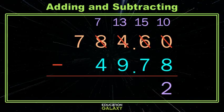10 minus 8 is 2, 15 minus 7 is 8 — don't forget your decimal. 13 minus 9 is 4, 7 minus 4 is 3, and lastly 7 minus nothing is 7.